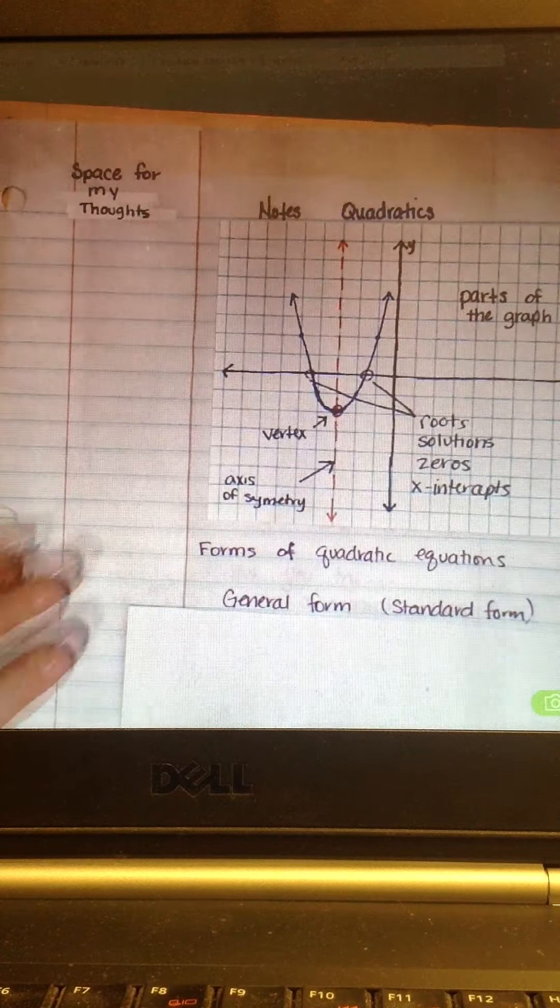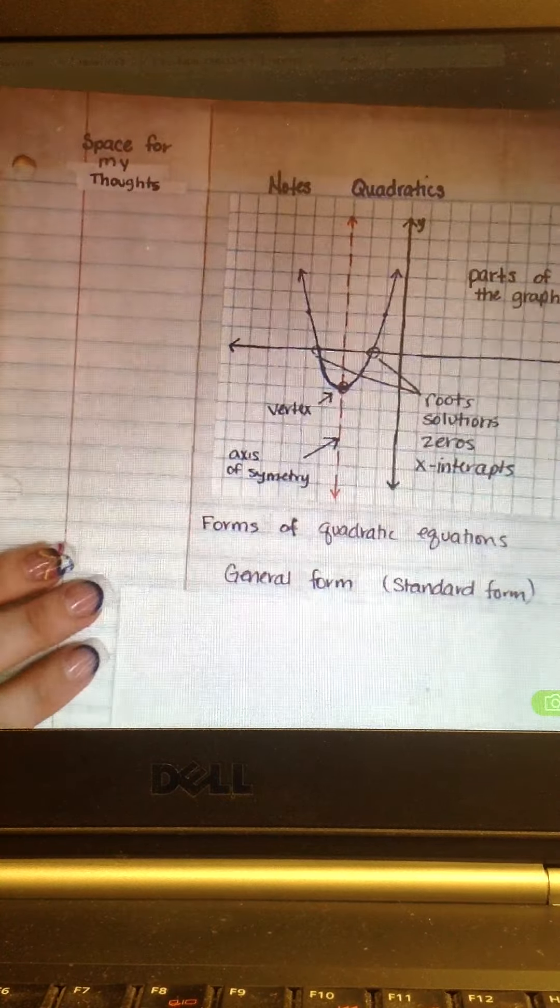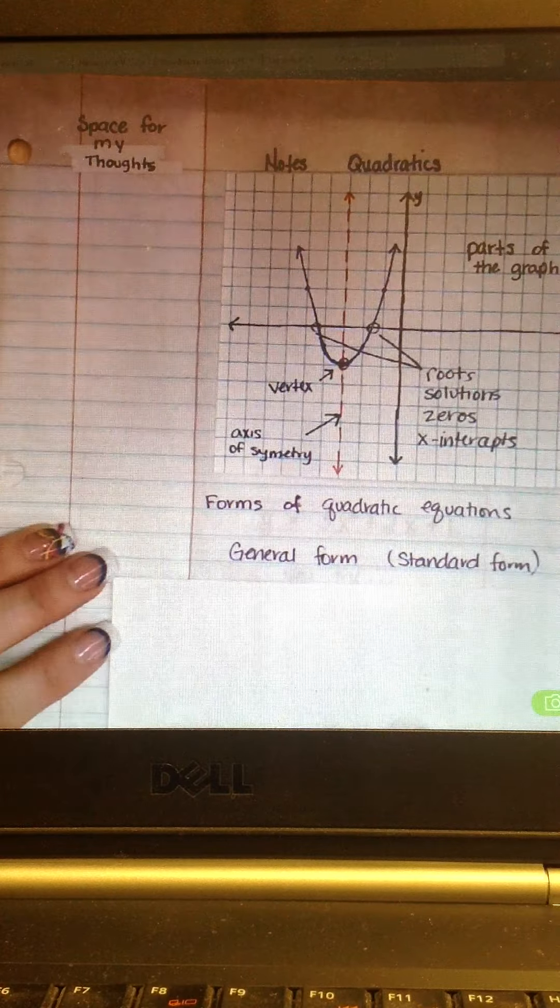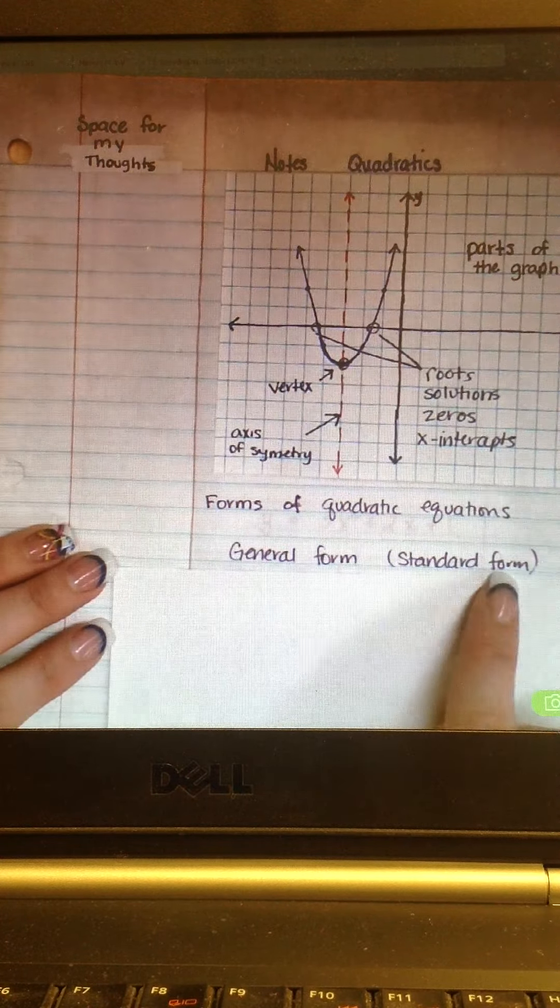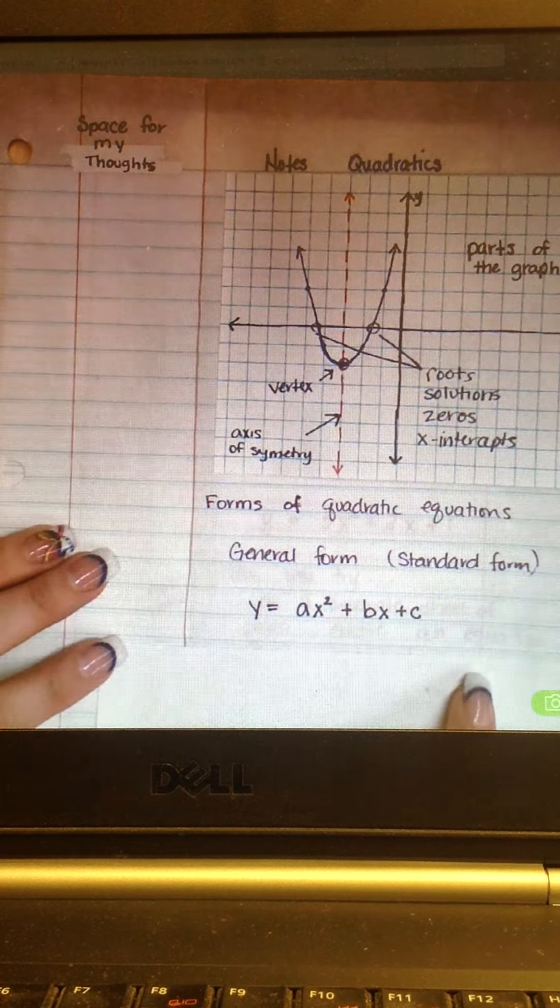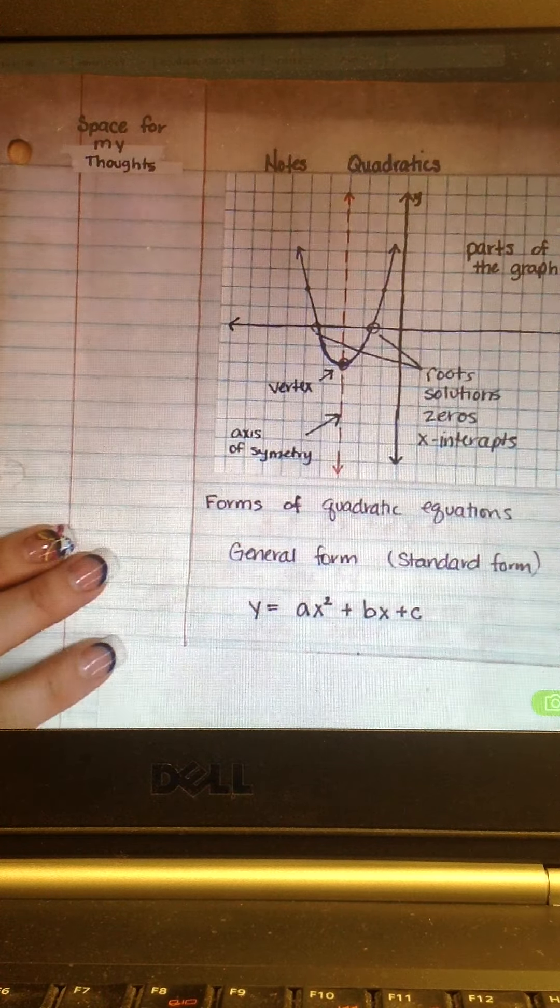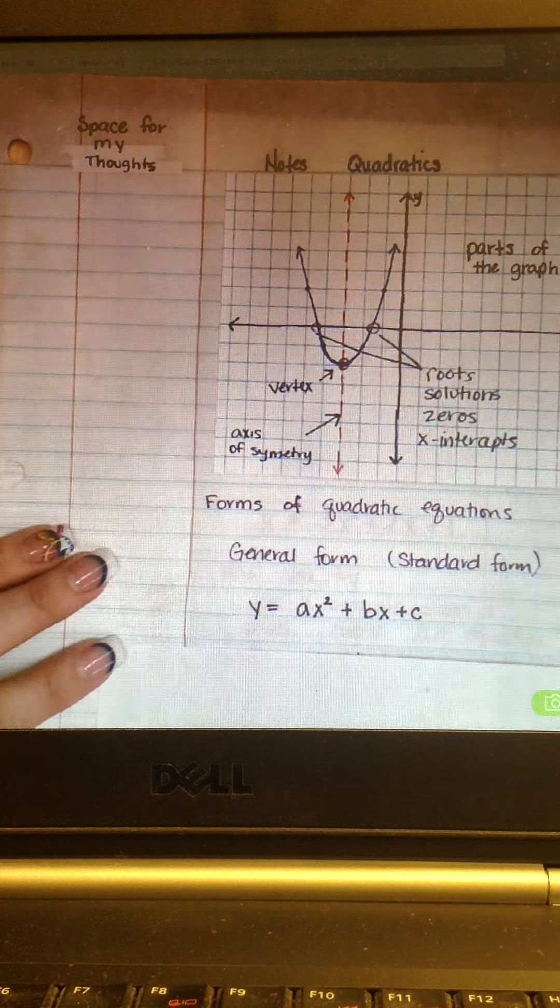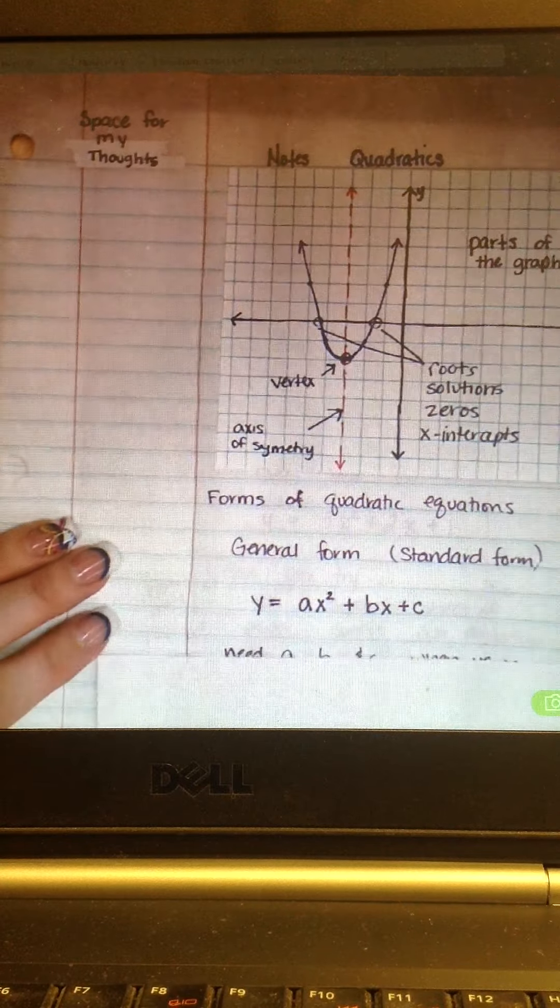Forms of quadratic equations. Quadratic equations come in two forms. They come in a general form, which is also known as the standard form. And it looks like this. Y equals AX squared plus BX plus C. A, B, and C are all constant numbers.